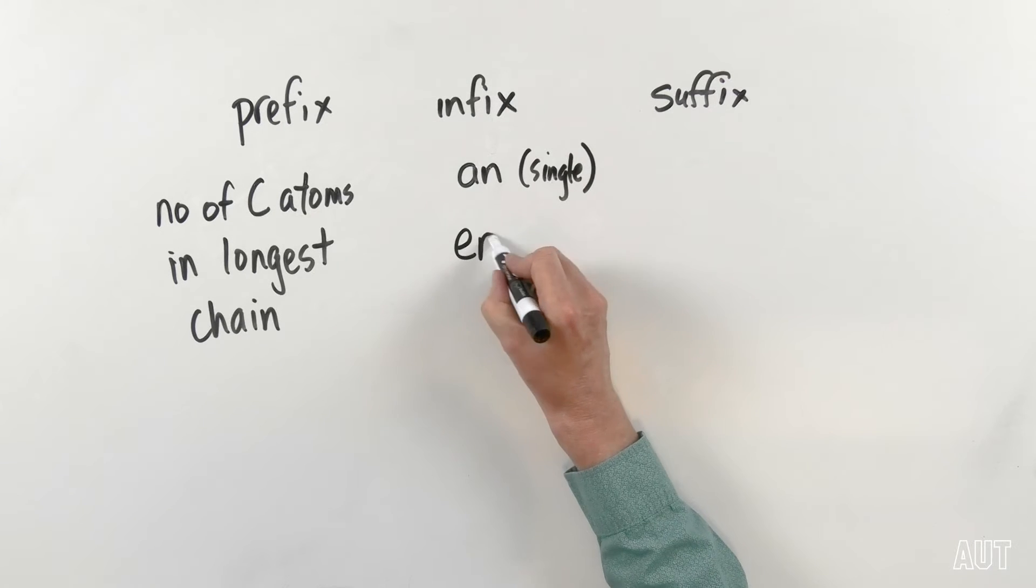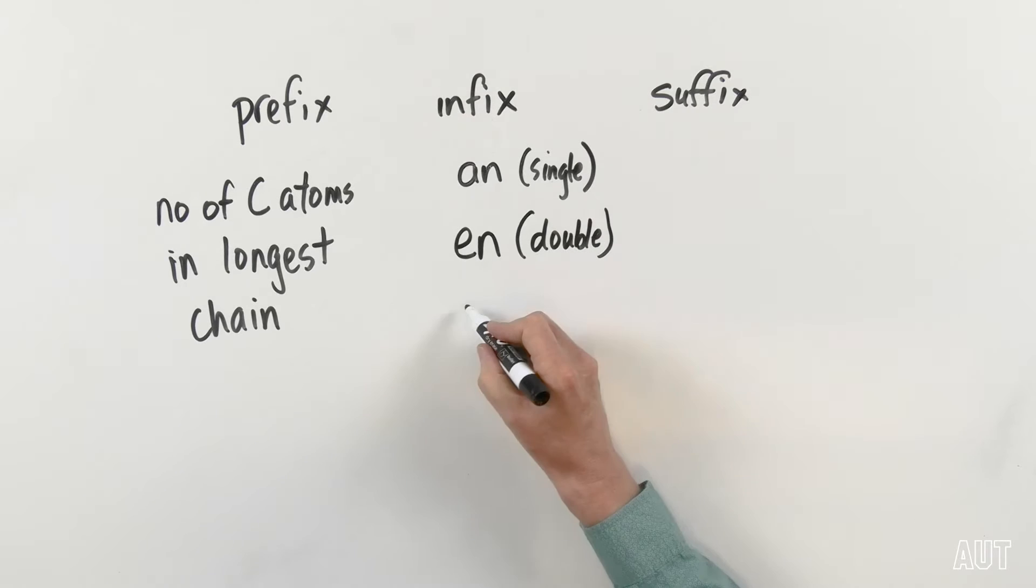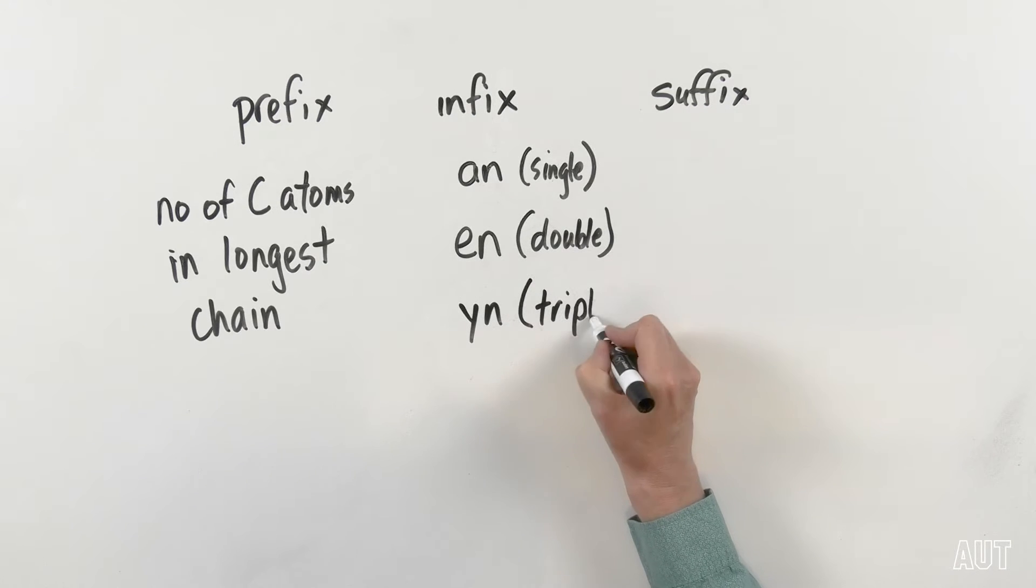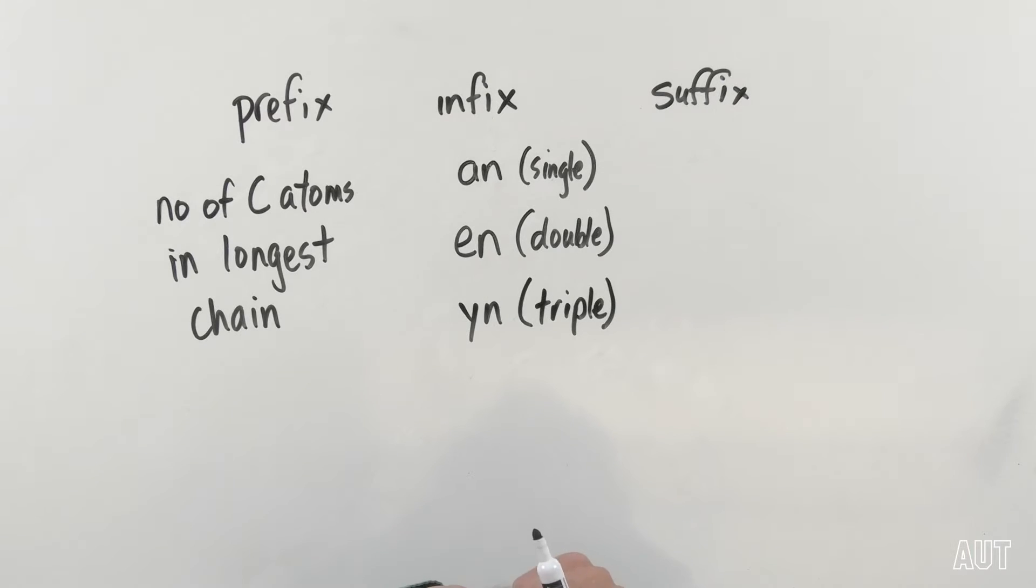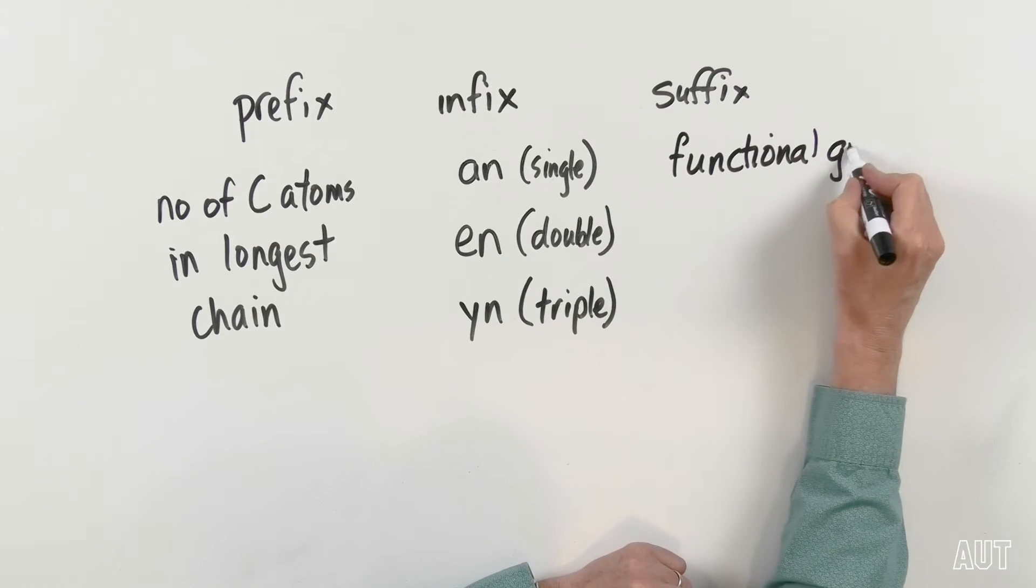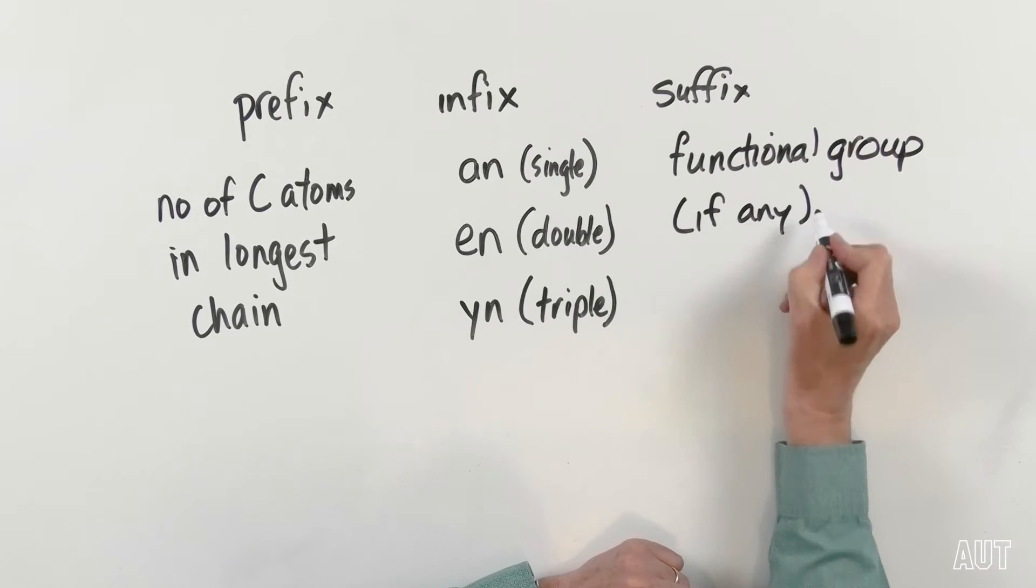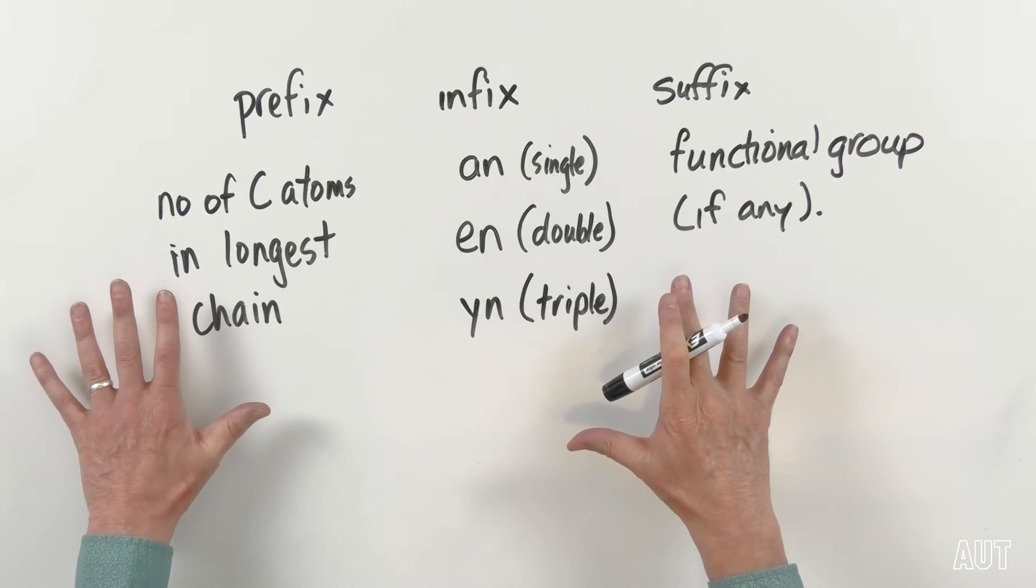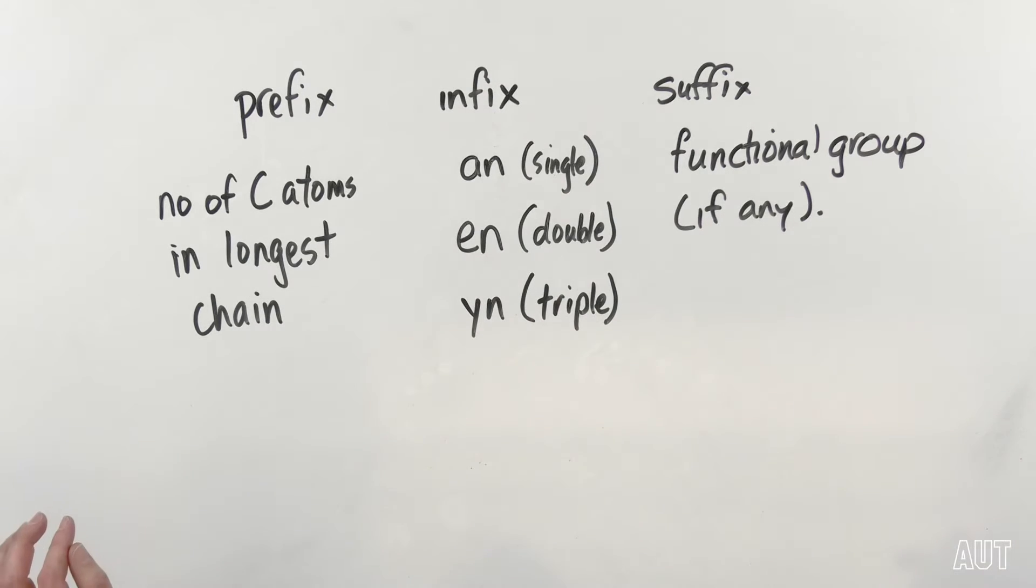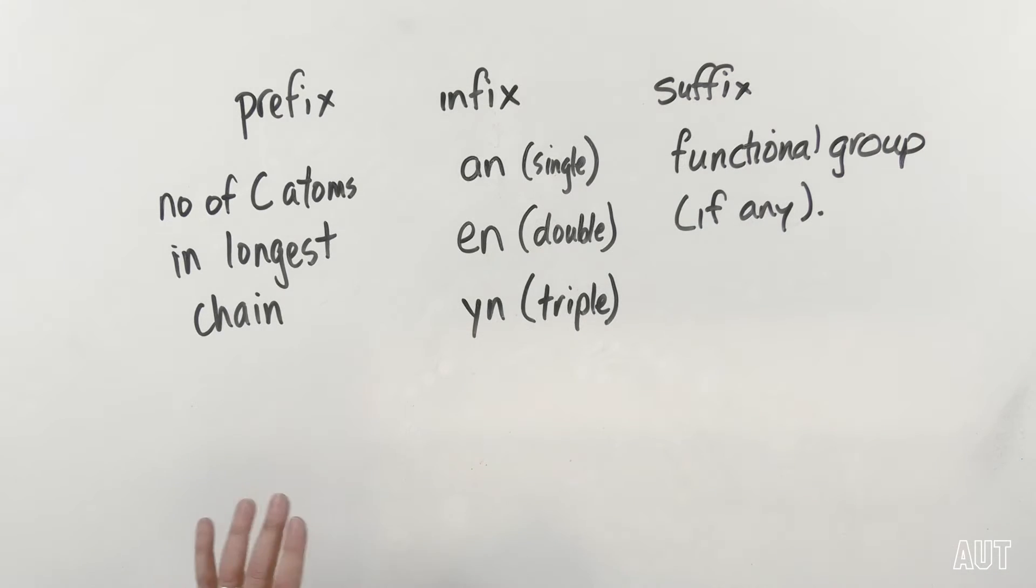Now, the infix is determined by the type of bonding in the molecule. With alkanes, we said that we only had single bonds everywhere in the molecule. If that's the case and we've only got single bonds, then the infix is an. If we have got double bonds, then the infix becomes en for double. And if we've got triple bonds in the longest carbon chain, then we have the infix yn. The suffix is determined by the nature of the functional group, if any.